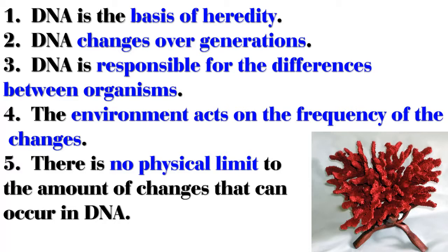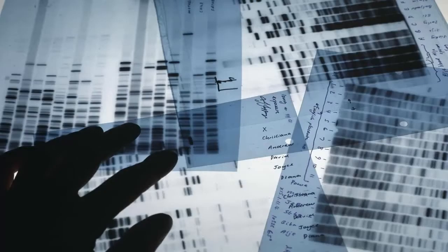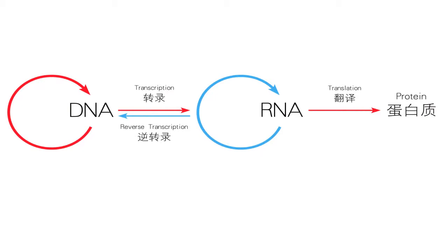Point 1: DNA is the basis of heredity. Point 2: DNA changes over generations. Point 3: DNA is responsible for the differences between organisms. Point 4: The environment acts on the frequency of the changes. Point 5: There is no physical limit to the amount of changes that can occur in DNA. Let me expand on each of those. Point 1 is simple — DNA is the basis of heredity. It's the two-dimensional representation of a three-dimensional cell. It's the simple digital code passed on from the previous generation's successful reproducers. It's the general biological information flow: the DNA makes the RNA, the RNA makes the proteins, and the proteins do the work in the cell.